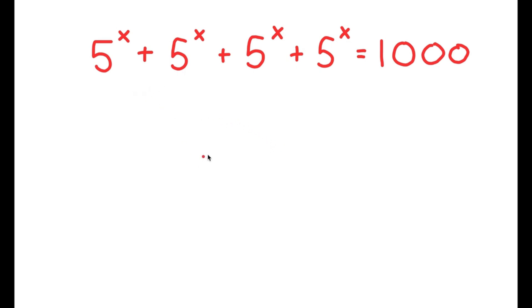So in this problem, I have 5 to the power of x plus 5 to the power of x plus 5 to the power of x plus 5 to the power of x is equal to 1000.